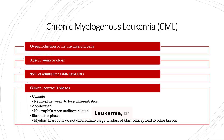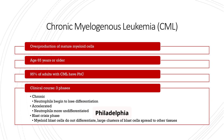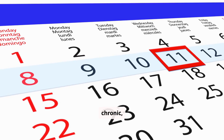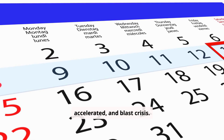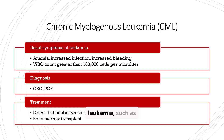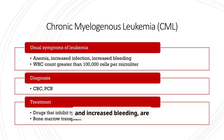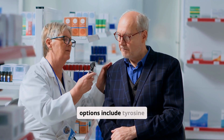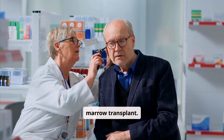Chronic myelogenous leukemia, or CML, involves the overproduction of mature myeloid cells. Most adults with CML have the Philadelphia chromosome. The clinical course has three phases: chronic, accelerated, and blast crisis. Usual symptoms of leukemia, such as anemia, increased infection, and increased bleeding, are present in CML. Diagnosis involves CBC and PCR, and treatment options include tyrosine kinase inhibitors and bone marrow transplant.